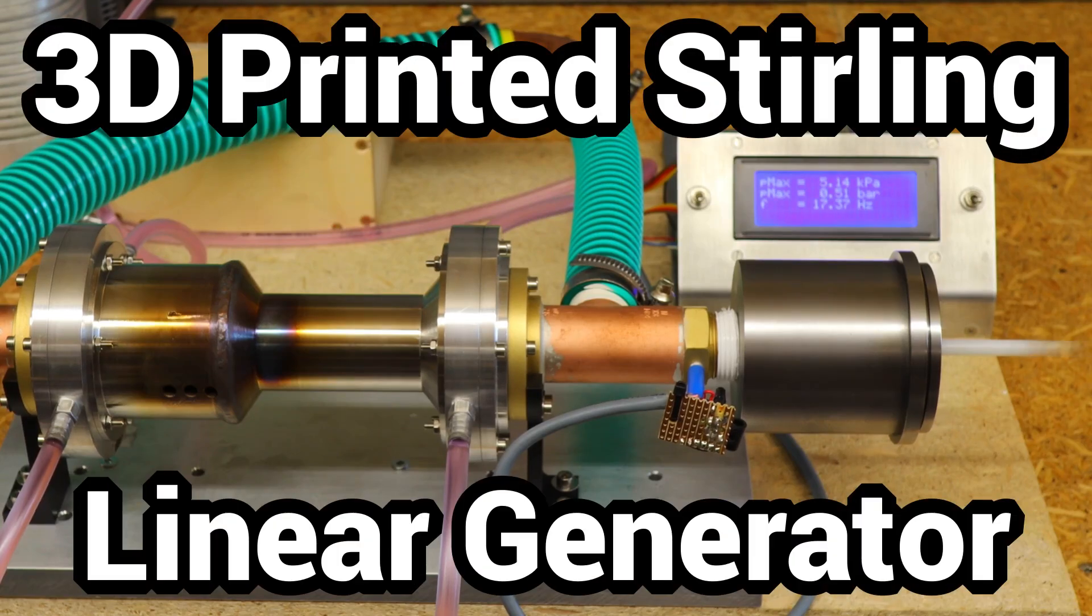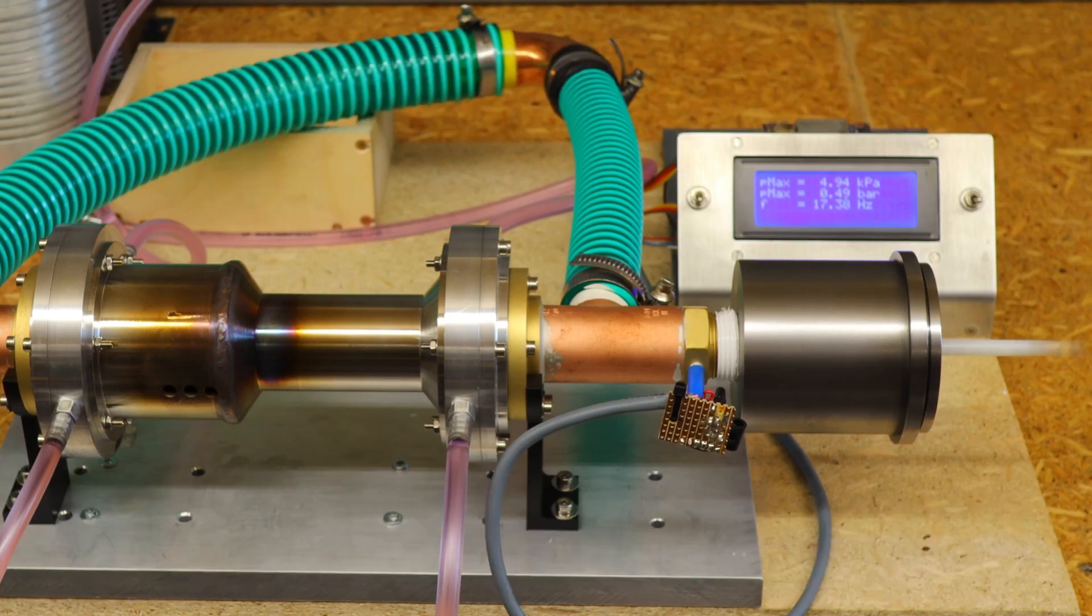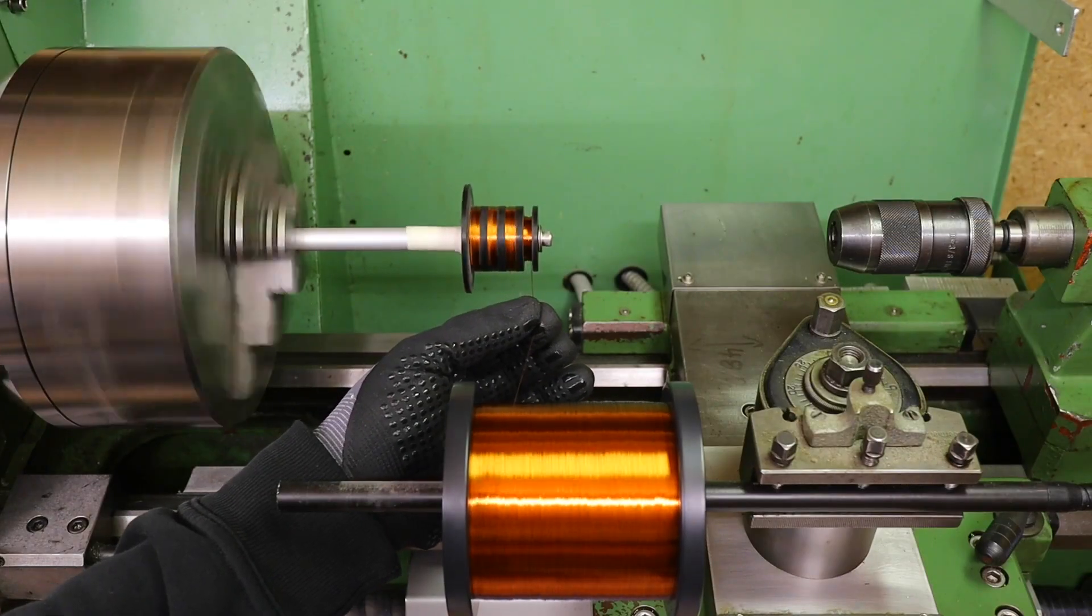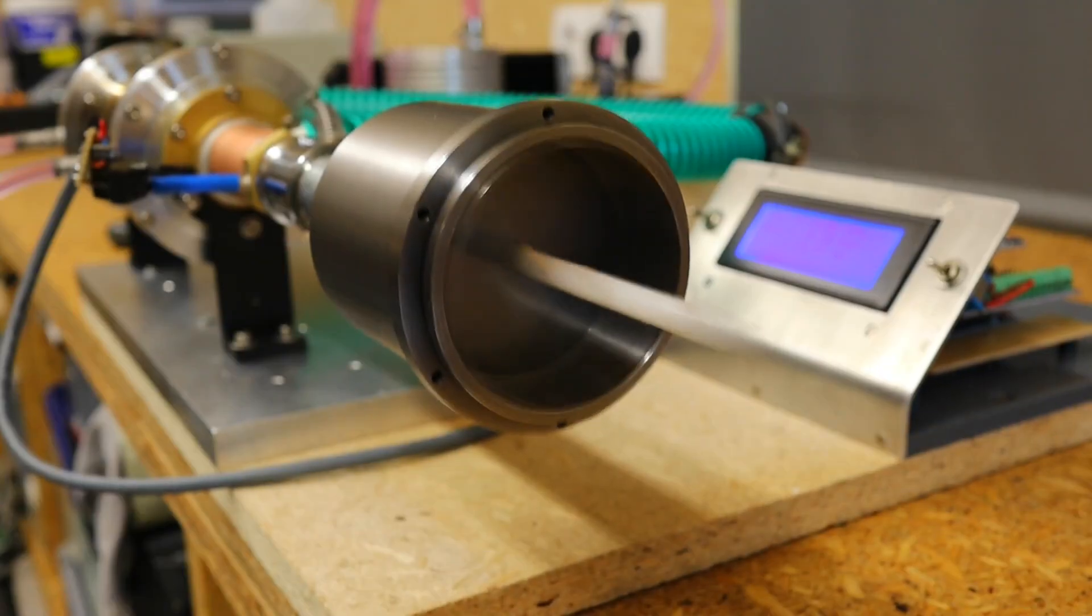I would like to build a linear generator to use the power of my free piston engine and to make performance tests to improve it. For a linear generator you need magnets, coils, and a movement of the two in relation to each other.